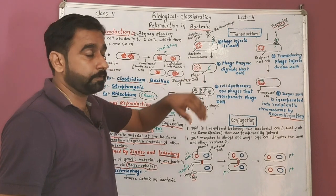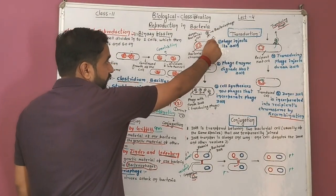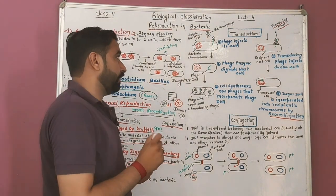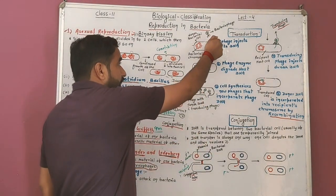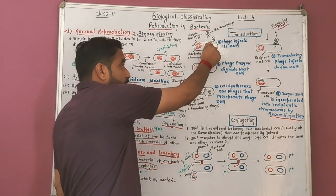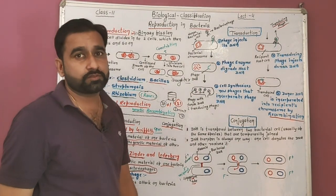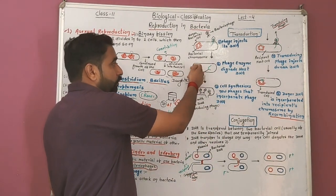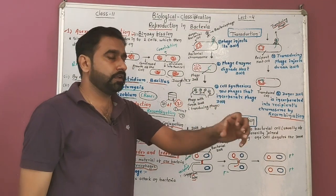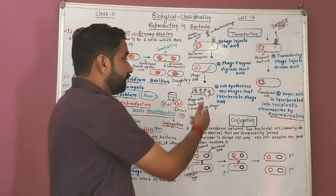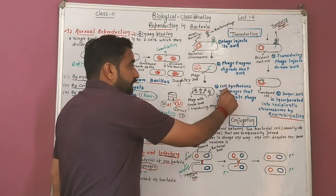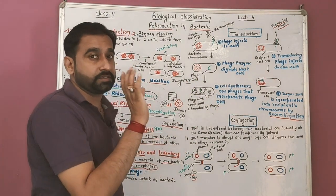The transduction process has five steps. In the first step, the bacteriophage attacks and attaches to the donor bacterial cell — the donor cell is the one that will donate its genetic material for recombination. The bacteriophage transfers its genetic material into the donor bacterial cell. Once inside, the phage has lytic enzymes that degrade the host DNA — breaking it into segments — and some of these segments bind with the phage.